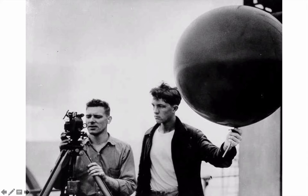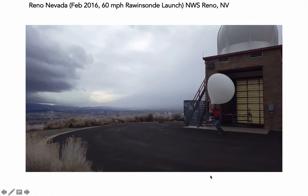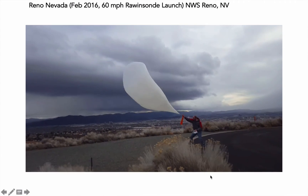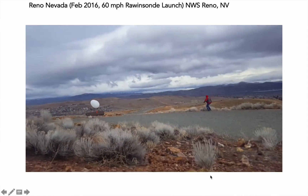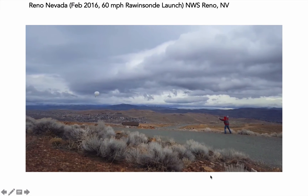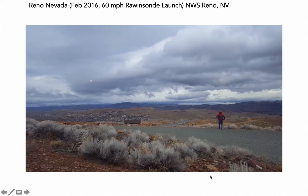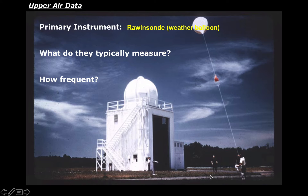Now instead of launching balloons and watching them or scanning them with radar, we attach a weather instrument pack to the balloon. This is a video from the National Weather Service out of Reno, Nevada — a weather balloon being launched in 60-mile-an-hour sustained winds. That little white box on the end is the instrument pack. As it goes up, it radios back information about weather variables. That's why we call it a rawinsonde, also called a radiosonde — though we'll just call it a weather balloon.